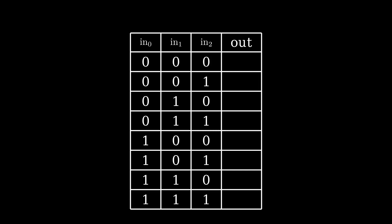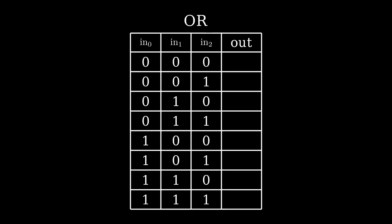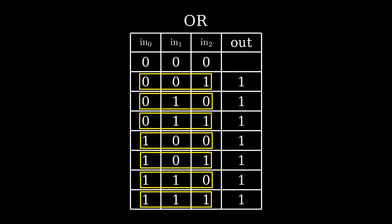Let's use three inputs and see what the output would be for each combination of values. Let's start with the logical gate AND. The output is 1 if the first input is 1 AND the second input is 1 AND the third input is 1. In other words, if all of its inputs are 1, then the output is also 1; otherwise the output is 0. For the logical gate OR, the output is 1 if at least one of its inputs is 1; otherwise the output is 0.